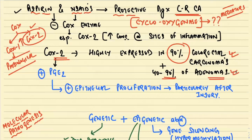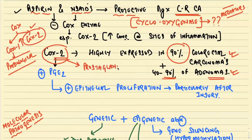Adenomas, as we read in the previous class, are precursors of colorectal carcinomas. COX-2 plays an important role in causation of cancer. As someone rightly said, COX enzymes are involved in synthesis of prostaglandins. All prostaglandins are synthesized via the COX pathway, and one prostaglandin — PGE2 — is responsible for epithelial proliferation and predisposes to colorectal carcinoma.